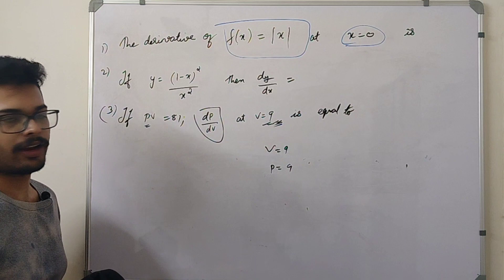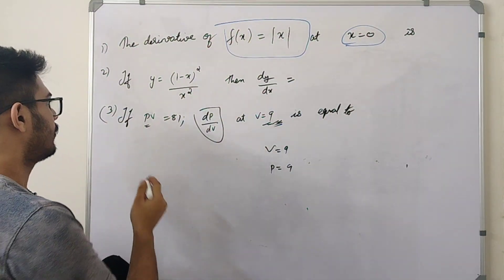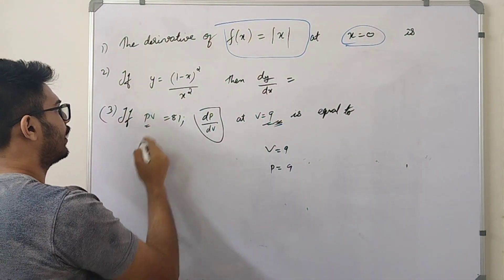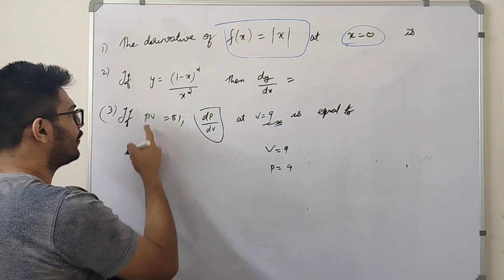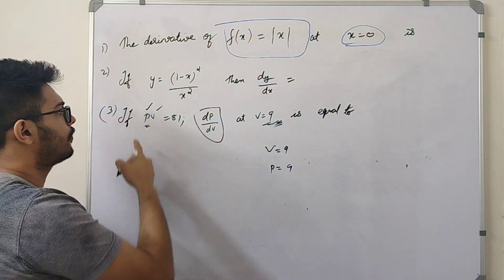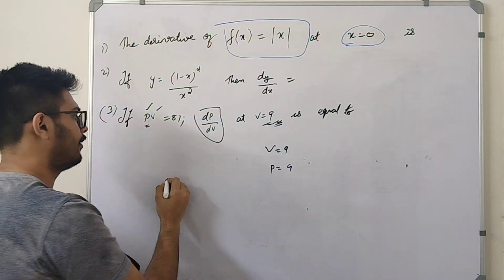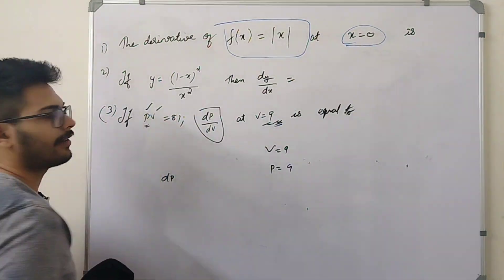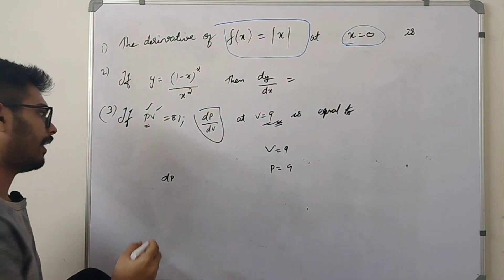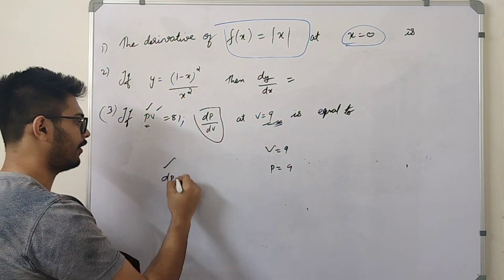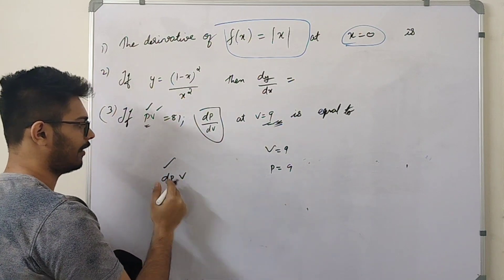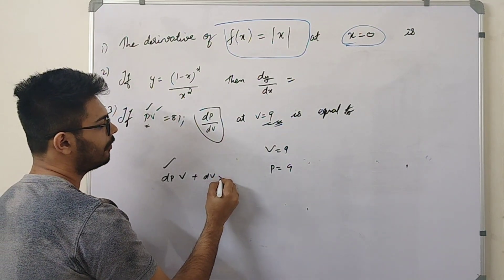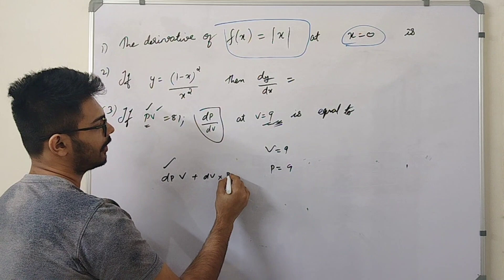Let's apply the product rule. The product rule applies to the function p. Now p has derivative dp, v has derivative — that is the first function derivative into second function, and the second function v derivative into first function.